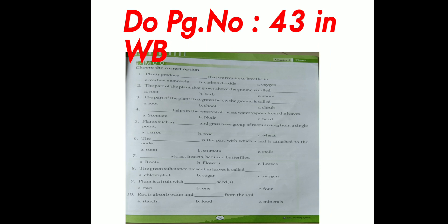First question. Plants produce dash that we require to breathe in. Option A, carbon monoxide. B is carbon dioxide. C is oxygen. Second question. The part of a plant that grows above the ground is called dash. A is root. B is herb. C is shoot.